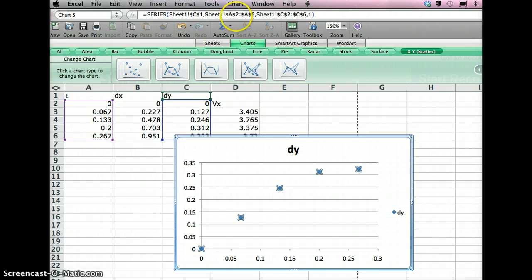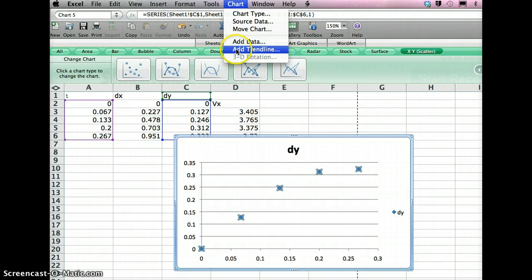Then you go to the manual chart. Then add a trend line, which is best fit.